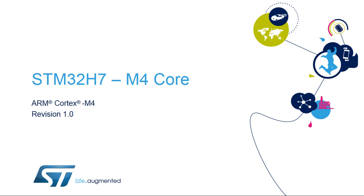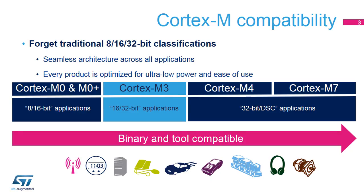Hello, and welcome to this presentation of the ARM Cortex-M4 core. In addition to the main Cortex-M7 CPU, the STM32-H747-H757 and STM32-H745-H755 microcontrollers integrate a Cortex-M4 core in order to benefit from the powerful performance of the 32-bit processor architecture, and particularly of the high level of deterministic processing.